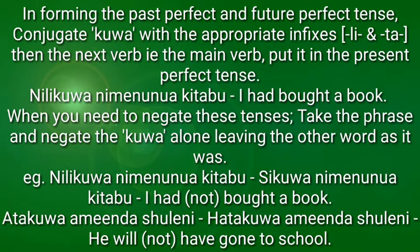When you need to negate these tenses, you negate the kuwa alone, leaving the other word as it was. So nilikuwa nimenunuwa kitabu becomes si kuwa nimenunuwa kitabu — I had not bought a book. As you can see, nilikuwa is the only one negated; nimenunuwa is left the same.